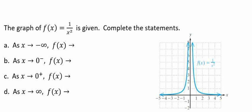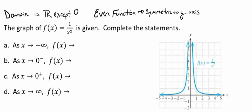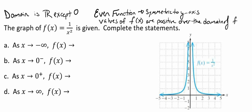Now, before we begin looking at our end behavior, if we look at our graph, our equation 1 over x squared, we know from the definition of the function the following observations. We know that the domain is all real numbers except for 0. We know that it's an even function, so it's going to be symmetric to the y-axis. And we know that the values of f of x are positive over the domain of the function f.